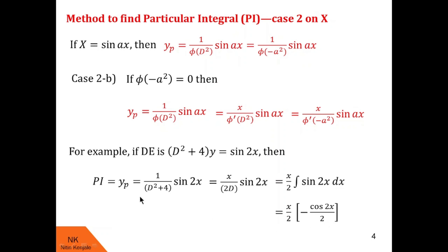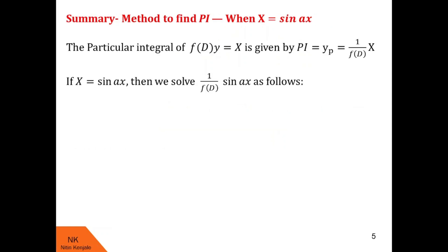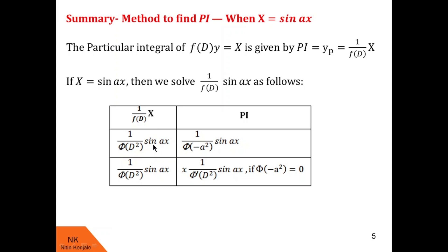So the particular integral is minus x cos 2x over 4. To summarize: if the RHS is sin ax, then 1/φ(d²) of sin ax is obtained by replacing every d² by minus a², provided φ(minus a²) ≠ 0. If φ(minus a²) = 0, put x in the numerator and take the derivative of the denominator with respect to d, then replace d² by minus a². Similarly, to find the particular integral when the RHS is cos ax, simply replace the sine function with cosine throughout.